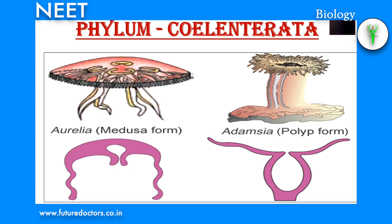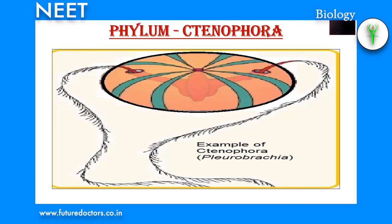Cnidarians reproduce both by asexual and sexual methods. In many cnidarians, the polyps usually reproduce asexually by budding to give rise to medusa. Fertilization may be external or internal. The cnidarians complete their life cycle through two phases: the asexually reproducing polyp phase and the sexually reproducing medusa phase.